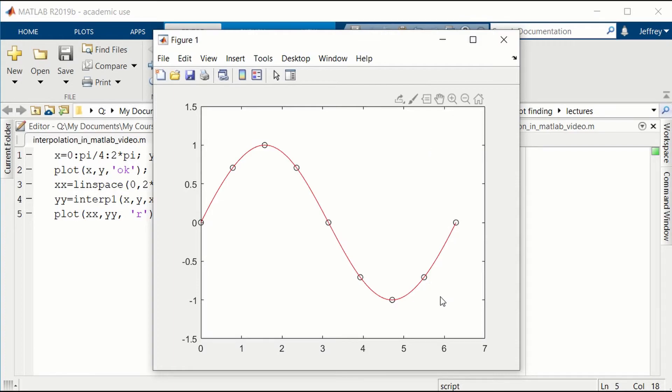We see that the interp1 gives a very smooth function. This is cubic spline interpolation. It has to go through all the points, but it looks very much like a sine function. We ought to look to see how good it actually is.